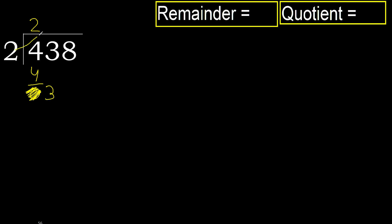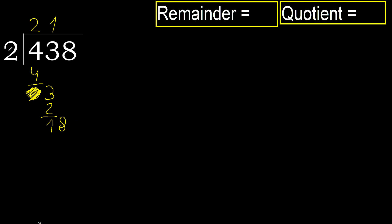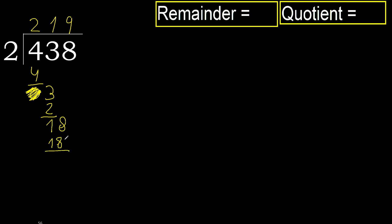2 multiplied by 2 is 4 — greater. 2 multiplied by 1 is 2 — not greater. Subtract. 2 multiplied by 9 is 18 — not greater. Subtract 0.